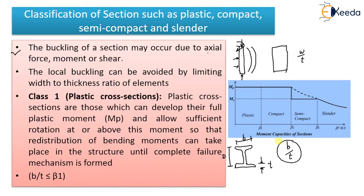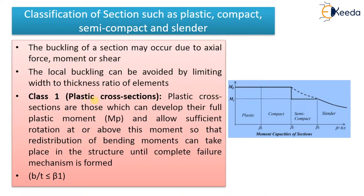The classification of sections will completely depend upon this b/t ratio only. We will divide the sections based on their slenderness ratios — or simply the b/t ratio. The first type is known as Class 1, and that is the plastic cross section.